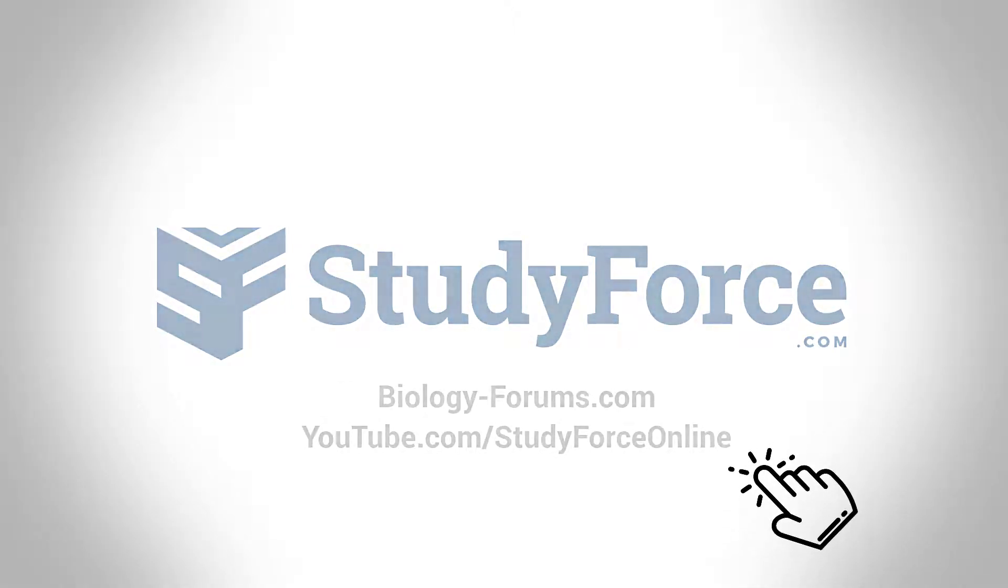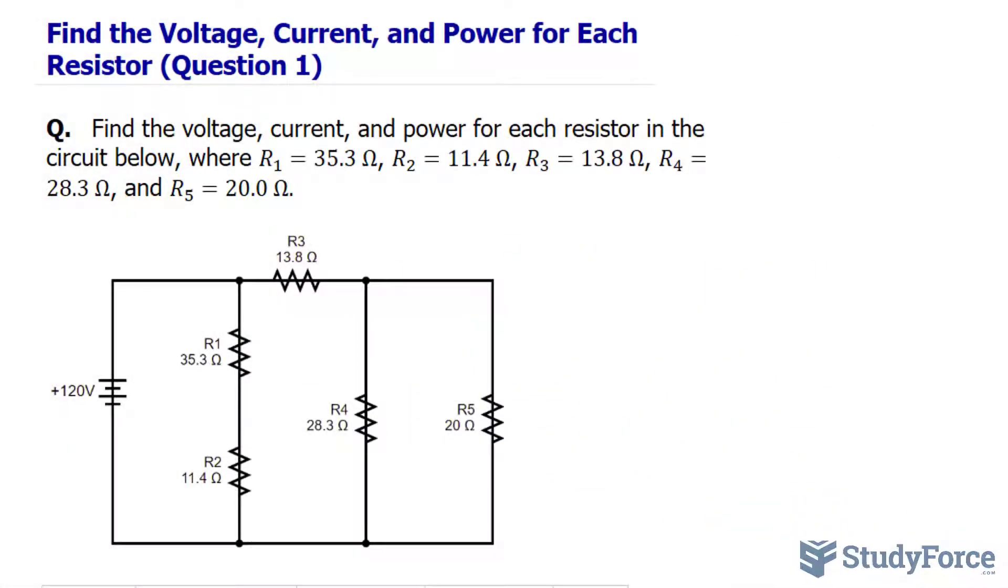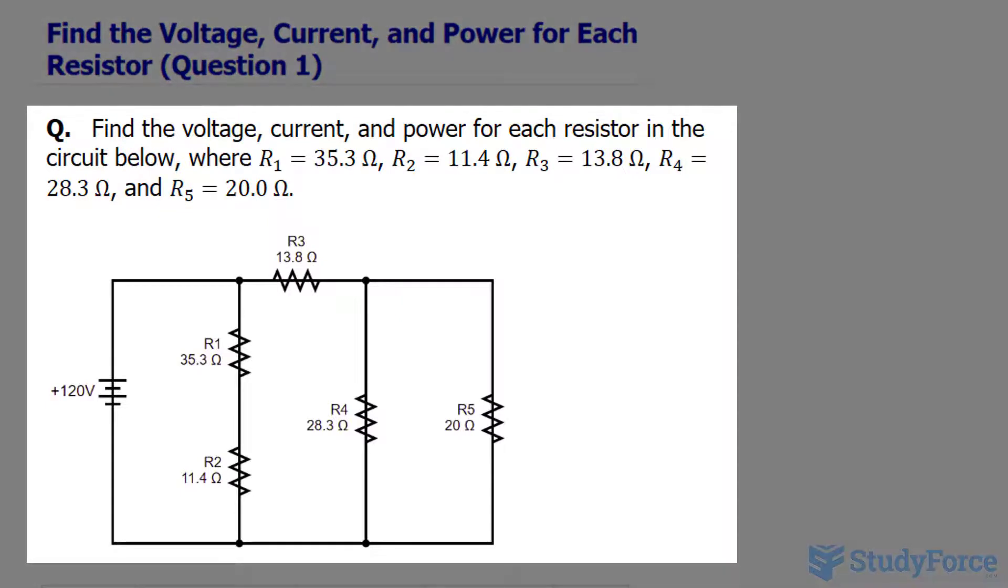In this lesson, I'll show you how to find the voltage, current, and power for each resistor. The question reads, find the voltage, current, and power for each resistor in the circuit below, and the resistance of each of these resistors is provided.